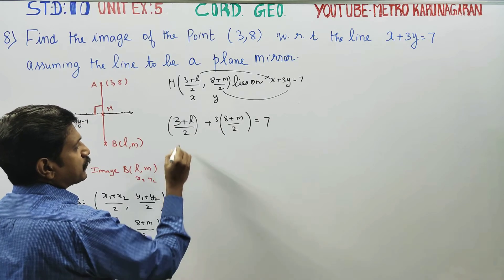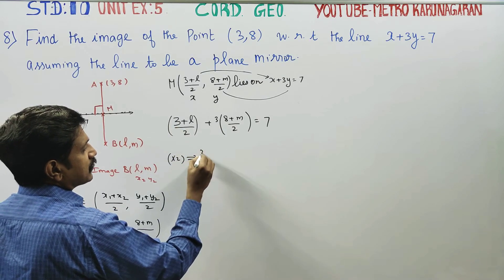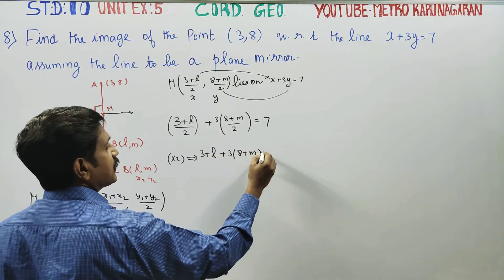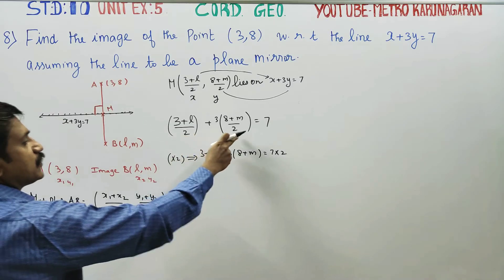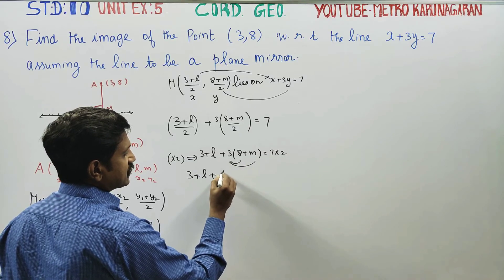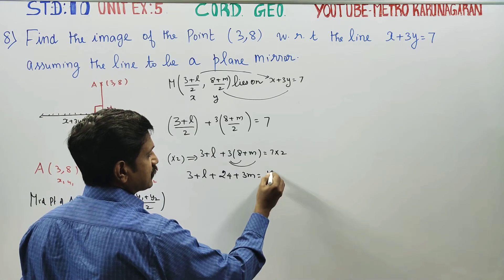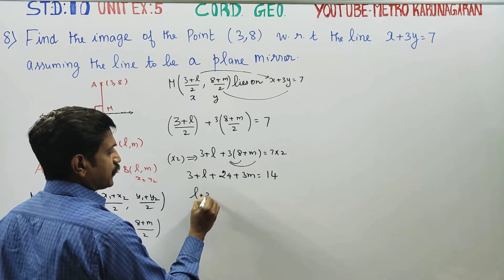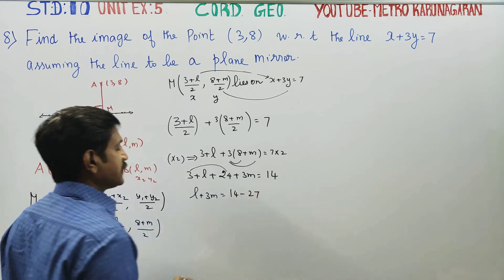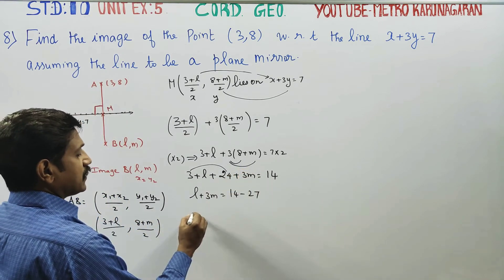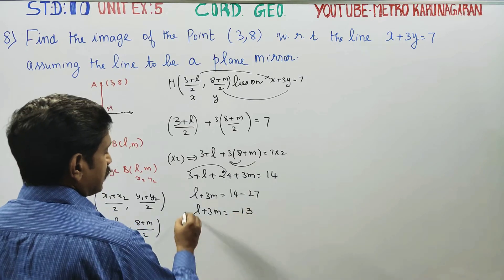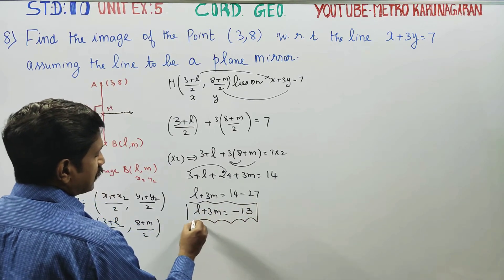Substituting the midpoint coordinates: (3 plus L) by 2 and (8 plus M) by 2 into x plus 3y equals 7. Multiplying through by 2: 3 plus L plus 3 times (8 plus M) equals 14. This gives L plus 3M equal to minus 13. This is equation number 1.